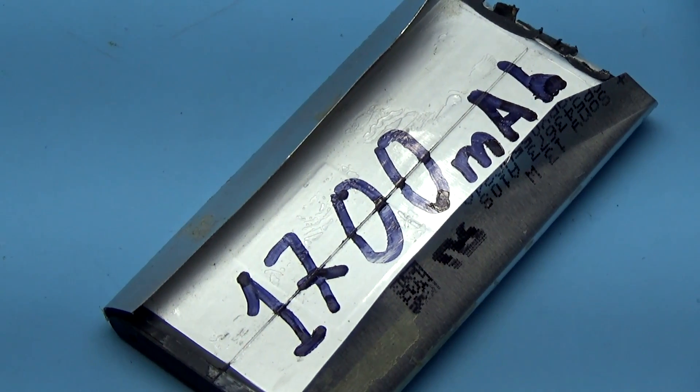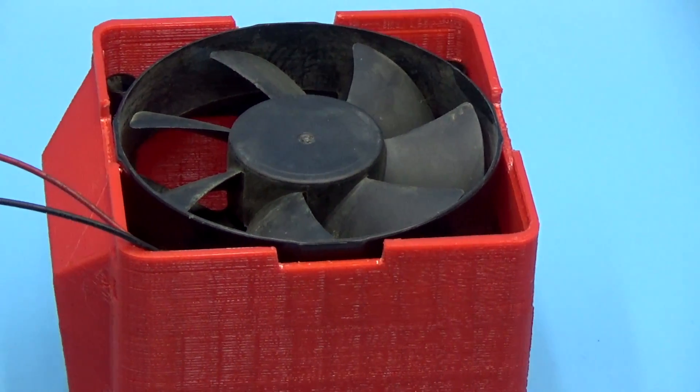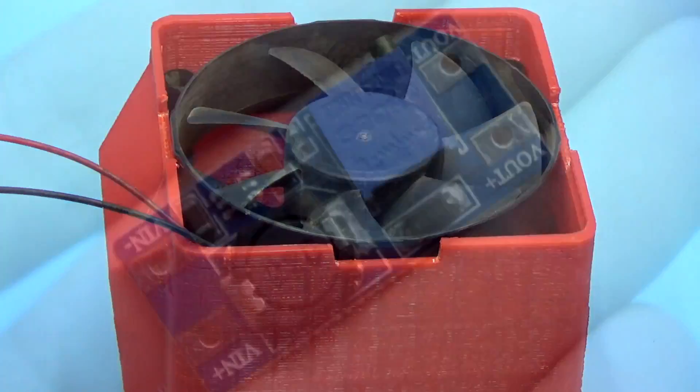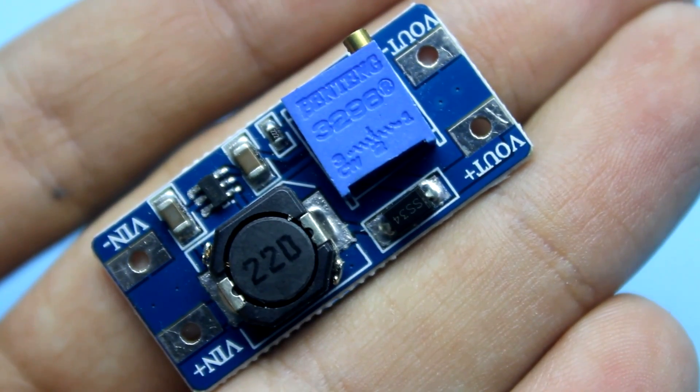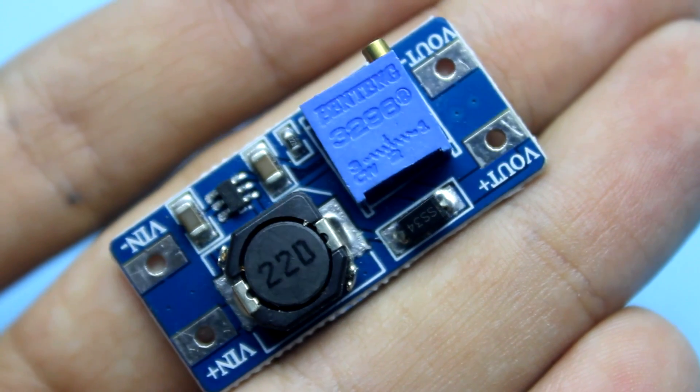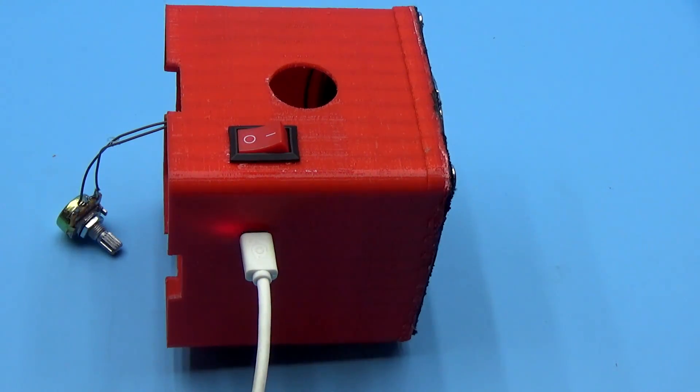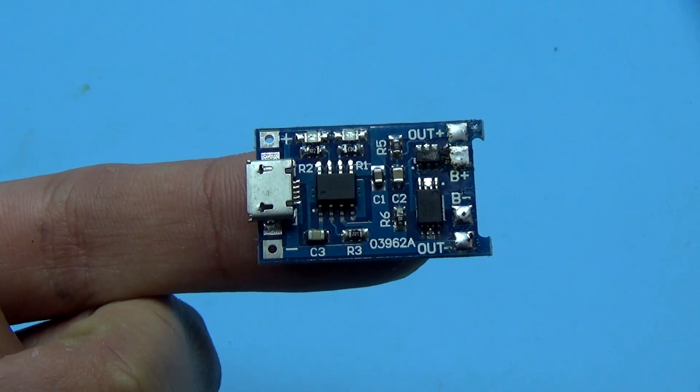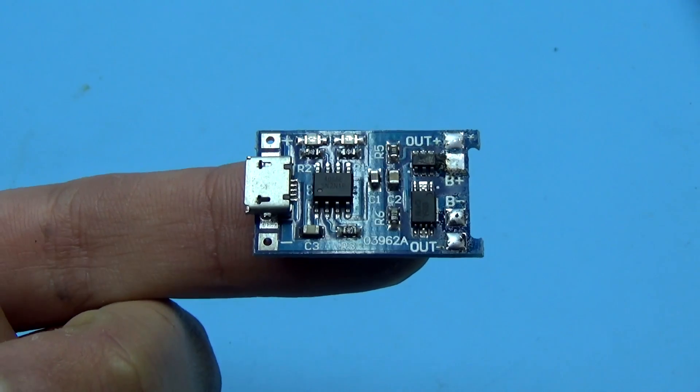Since the battery voltage is only 3.7V and the fan needs about 12V for normal operation, the MT3608 boost converter was used. The battery can be charged from any USB port. For charging, a board based on the TP4056 chip is used.